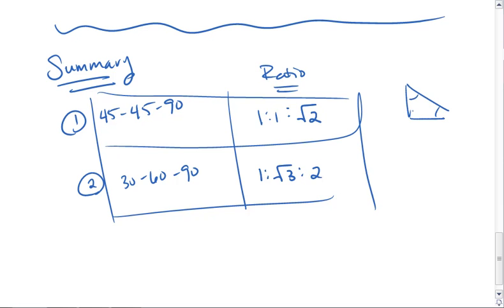Meaning, 45-45-90 has x, x, x times the square root of 2, and 30-60-90 has x, x square root of 3, and 2x.